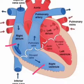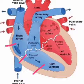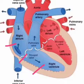At the junction of the right atrium and the right ventricle, one valve is present. This valve is made of three cusps and is known as the tricuspid valve. The tricuspid valve is present at the junction of the right atrium and right ventricle.